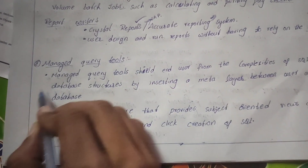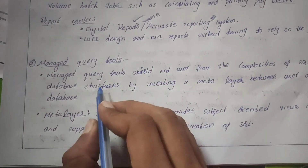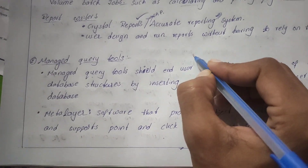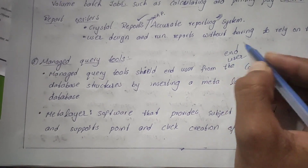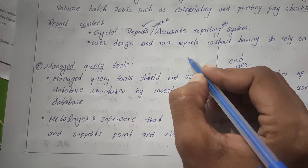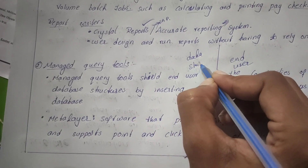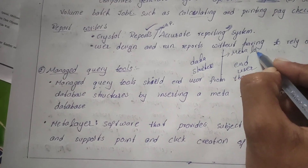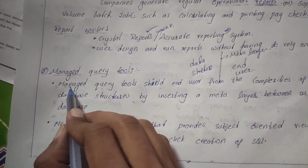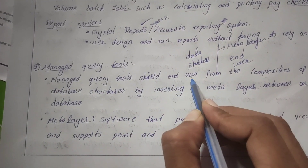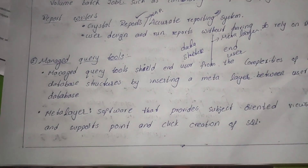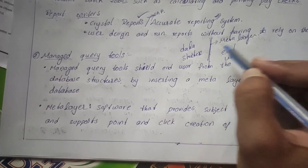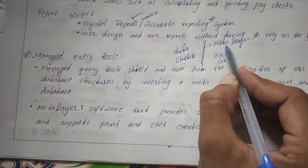Next are managed query tools. A managed query tool creates a seal — a metadata layer — between the end users and the database. It shields end users from the complexities of SQL and database structures by inserting a metadata layer between the end users and the database.